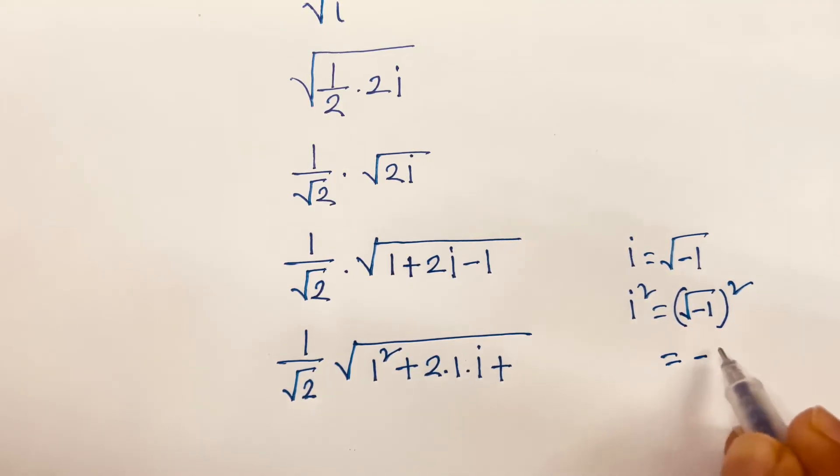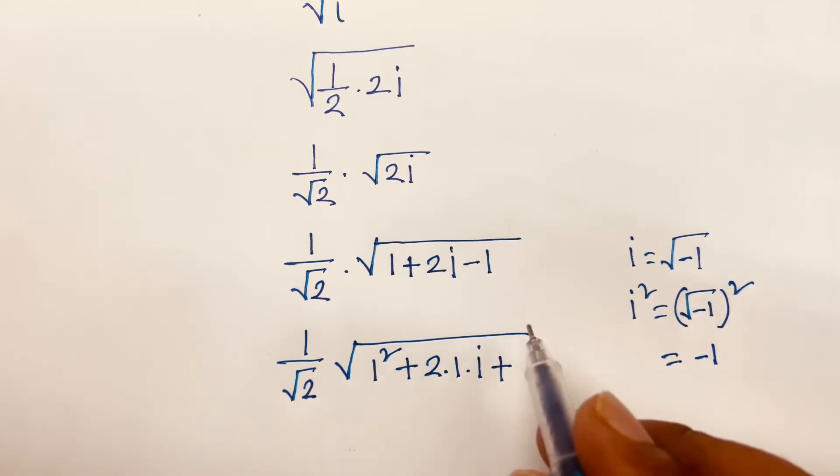So, it is minus 1, square root is cancelled. So, I can say minus 1 like as i square.